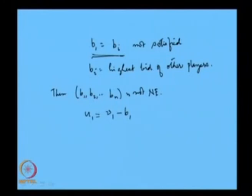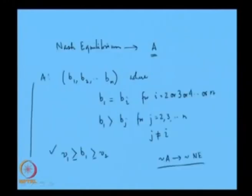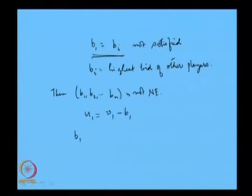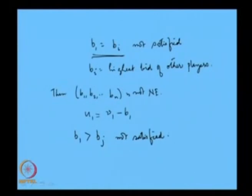If player 1's bidding is strictly greater than the highest bid of other players, then that is not a Nash equilibrium because player 1 will lower his bid and bid equal to B-bar, since his payoff is V1 minus B1 — as B1 declines, his payoff rises. So he will always prefer to bid as little as possible. Hence, if this condition is not satisfied, player 1 has a profitable deviation.